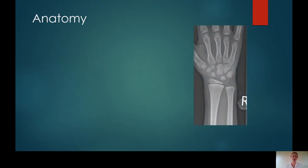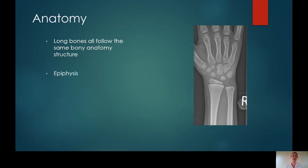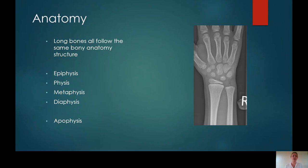Paediatric skeletal anatomy varies massively from adults. Although all bones follow the same bony anatomical structure, there is an epiphysis, physis, metaphysis, diaphysis and also apophysis that we see within children. Some of these terms can still relate to the adult skeleton as well. Metaphysis can be used to describe just the end of the bone in an adult skeleton, and the diaphysis refers to the shaft.